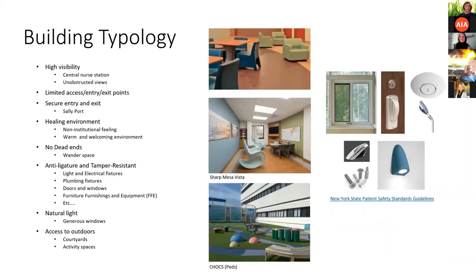All of these considerations create a distinct building. There will be a central nurse station with unobstructed views throughout — no columns in the middle of activity areas where patients can hide, and no corners where patients can tuck themselves in. Limited access entry and exit points must be secure. The sally port — two sequenced locked doors where the second won't open while the first is open — is heavily utilized when entering the unit. Overall, the facility must be a healing environment that is non-institutional, warm, and welcoming, while still implementing anti-ligature fixtures and furniture.